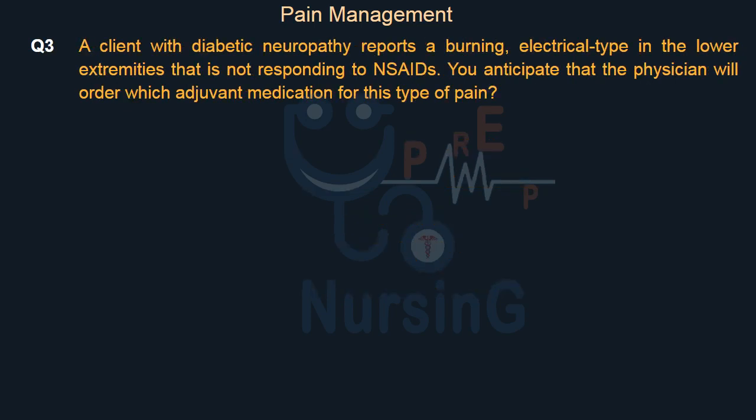A client with diabetic neuropathy reports a burning, electrical-type pain in the lower extremities that is not responding to NSAIDs. You anticipate that the physician will order which adjuvant medication for this type of pain?